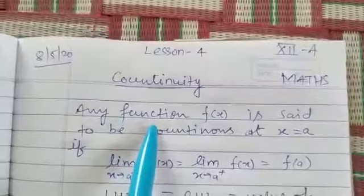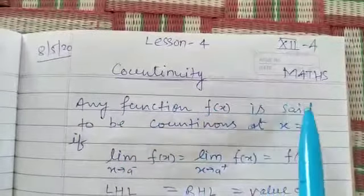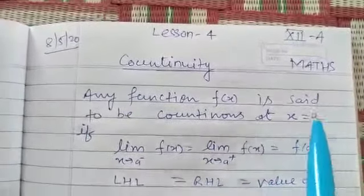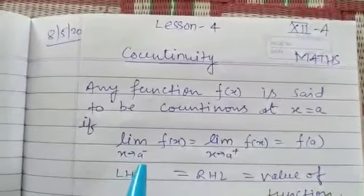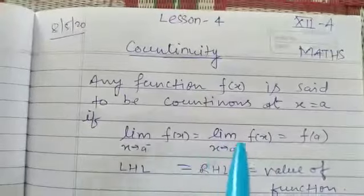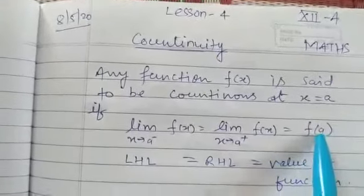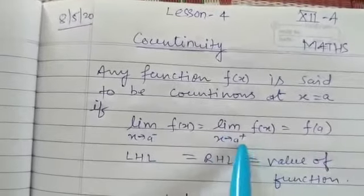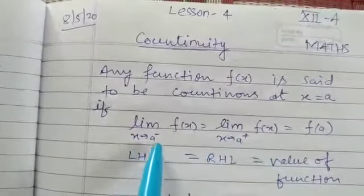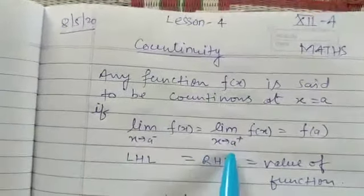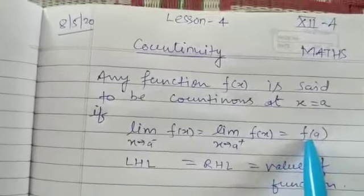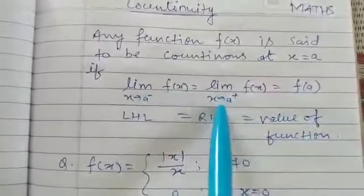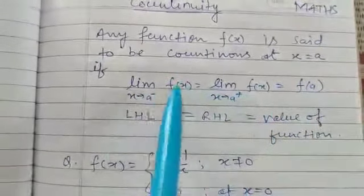Any function f(x) is said to be continuous at x equal to a if LHL equal to RHL equal to f(a). This is LHL, this is RHL. LHL means left-hand limit, this is right-hand limit, and this is the value of the function at that point. So when these three things are equal, then we say that function is continuous.